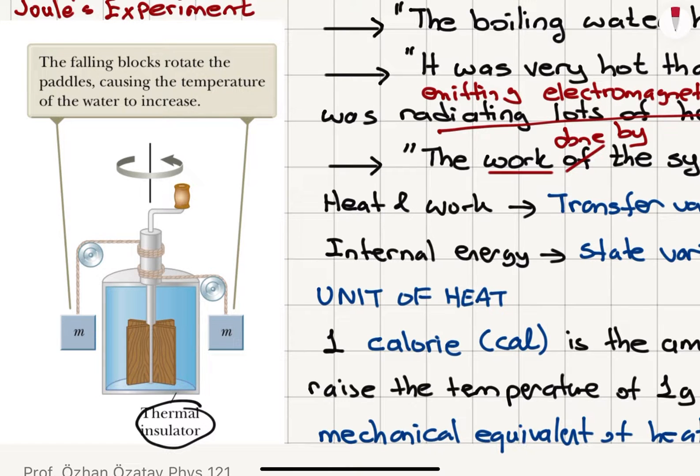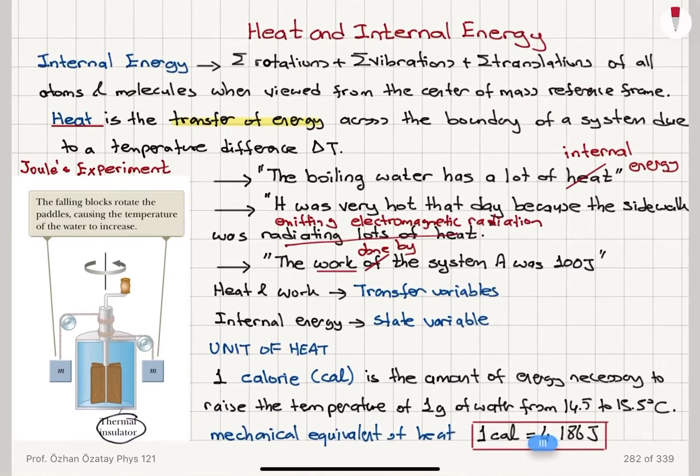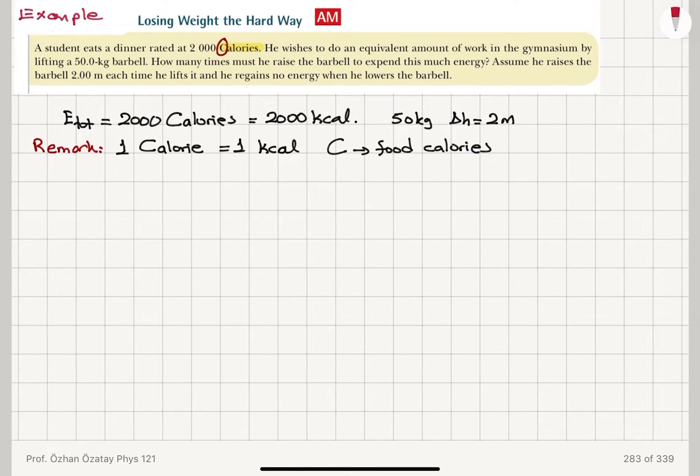And as the pedals rotate, they will have friction with the water molecules. So there will be kinetic energy transfer between the pedal and water molecules heating up the water. And the water is inside a thermal insulator. So he finds that 1 calorie of heat transferred to water is equal to 4.186 joules of mechanical energy. It's 4.186 joules of work done by the pedals.